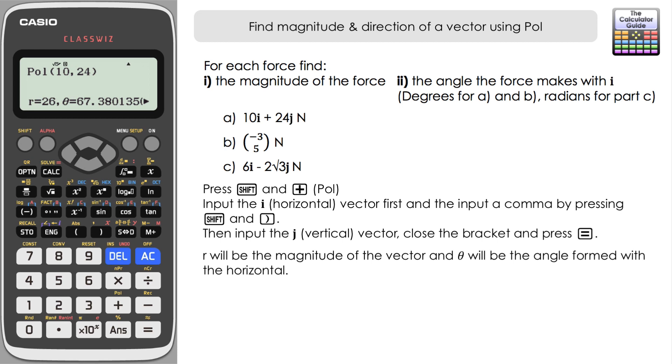So R would represent the magnitude so in this case it's going to be 26 newtons and the angle here, well that will be the angle that's formed with the horizontal so that's with the I vector 67.38 to two decimal places. This works because we've inputted the vector in terms of I first and then J, X first and then Y. So this will give the angle that is formed with the horizontal, with the I vector 67.38.